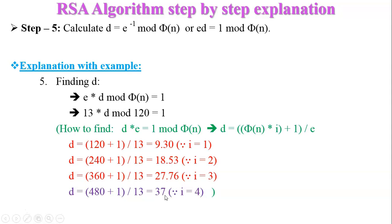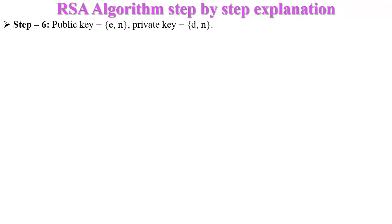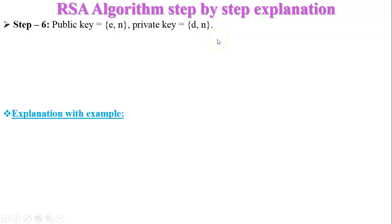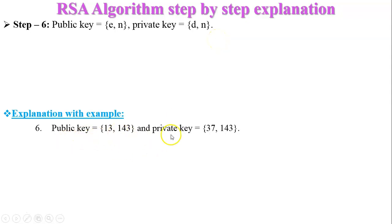Step number six: the public key is (e, n) and the private key is (d, n). So the public key is 13 and the private key is 37.